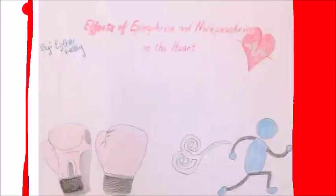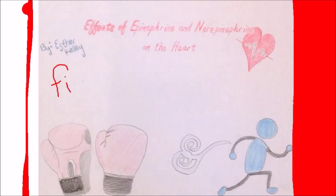These hormones are otherwise known as adrenaline and noradrenaline and are released by the adrenal medulla. They respond to what is known as the fight or flight response. Fight being represented by the boxing gloves and flight being represented by the guy running away.